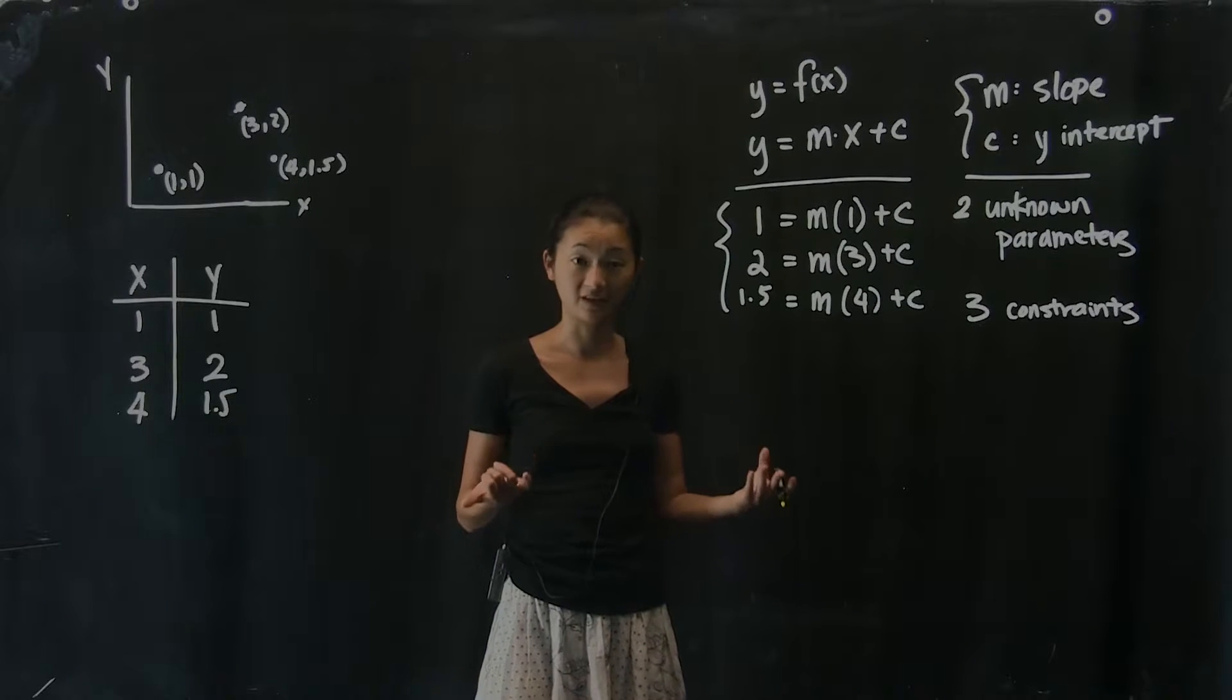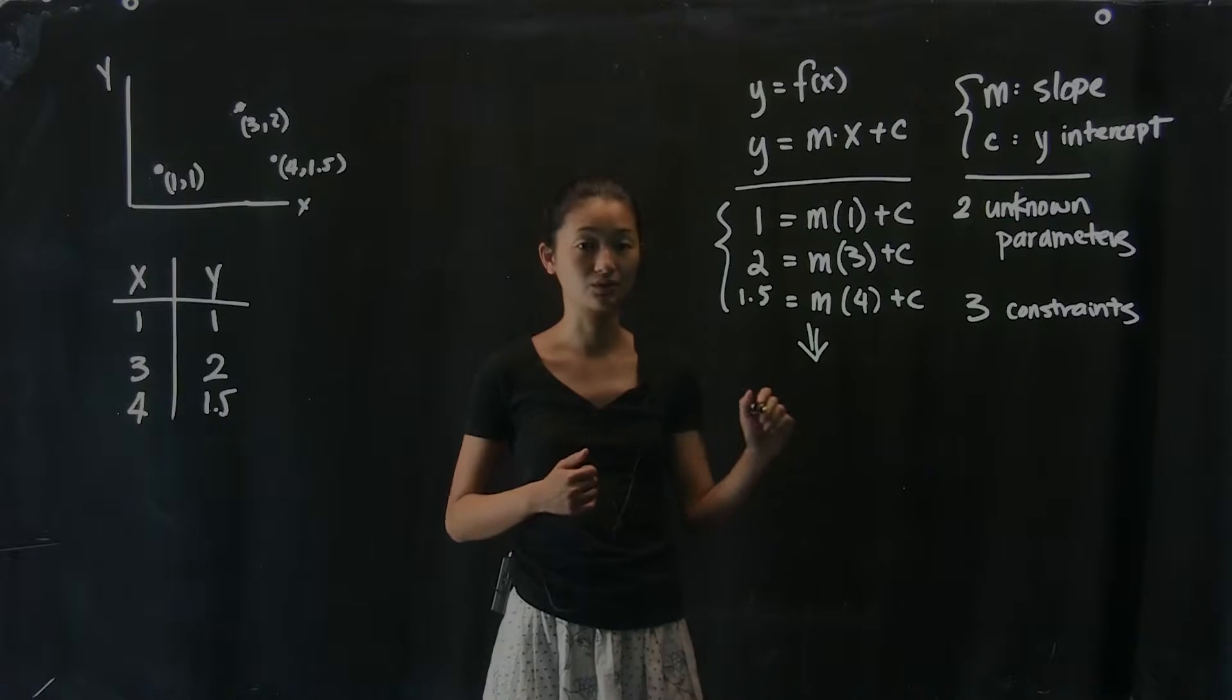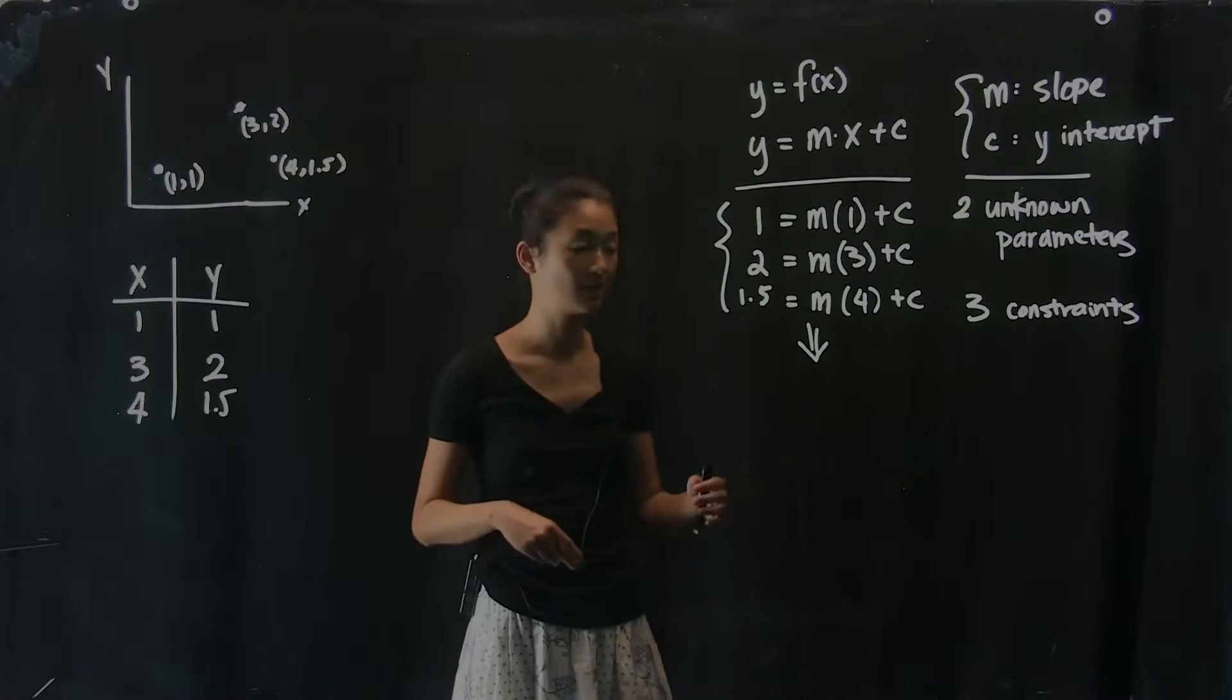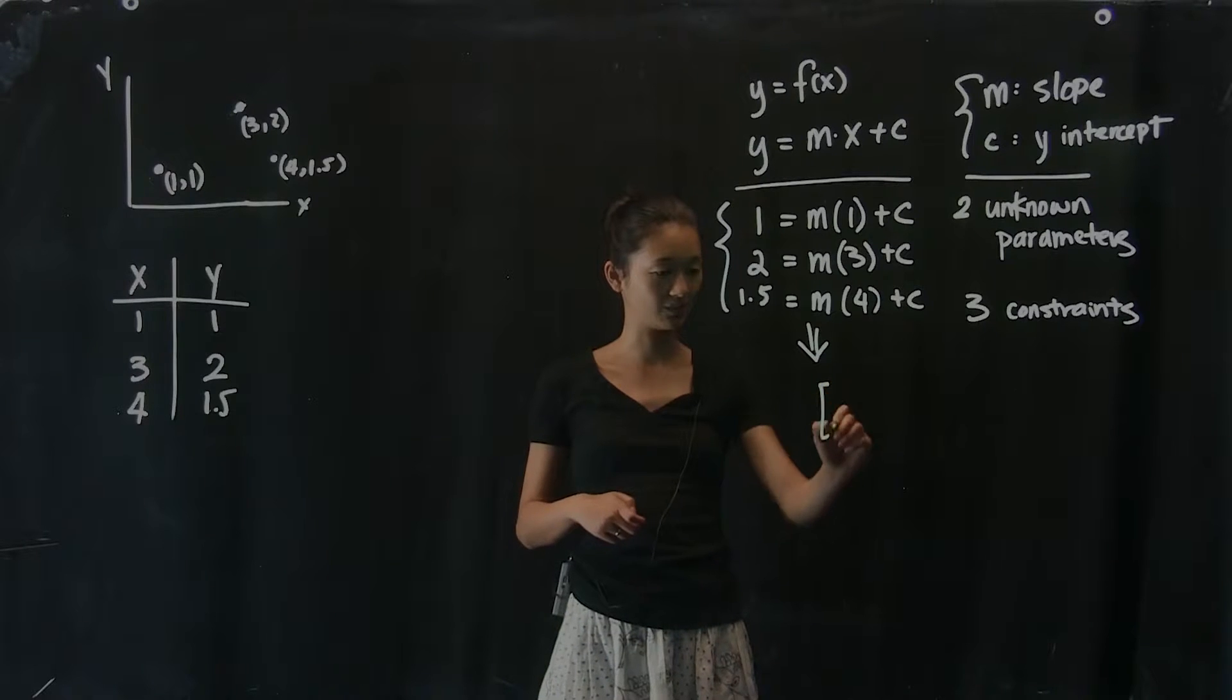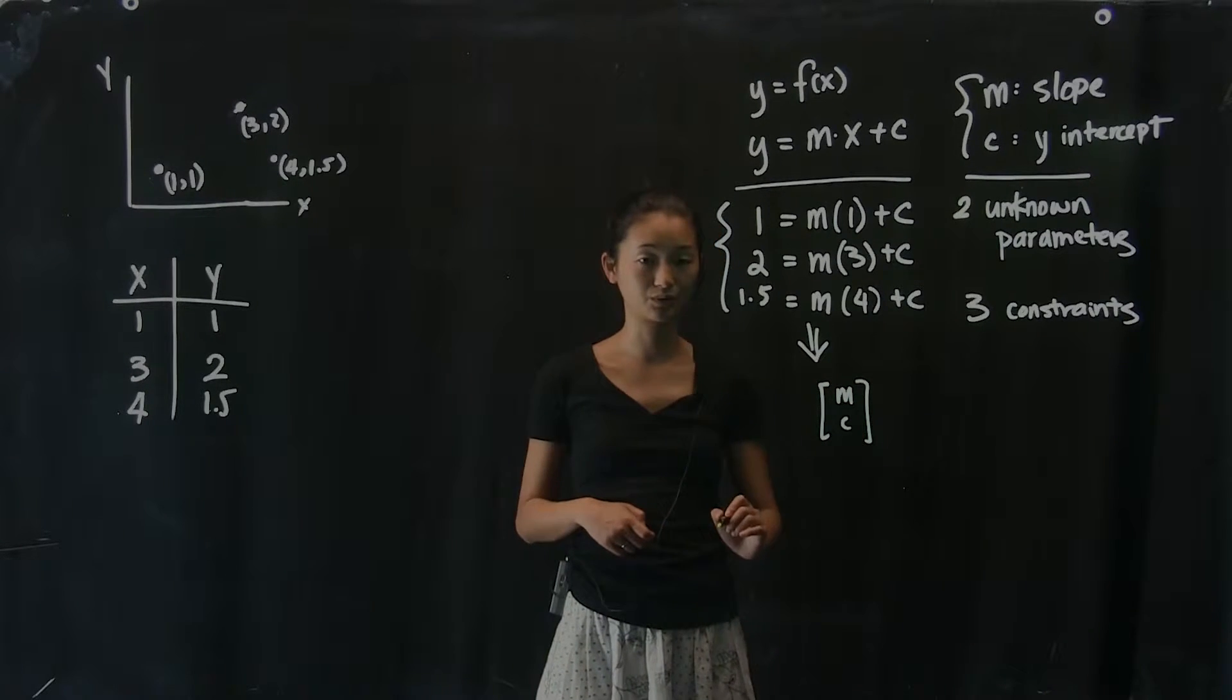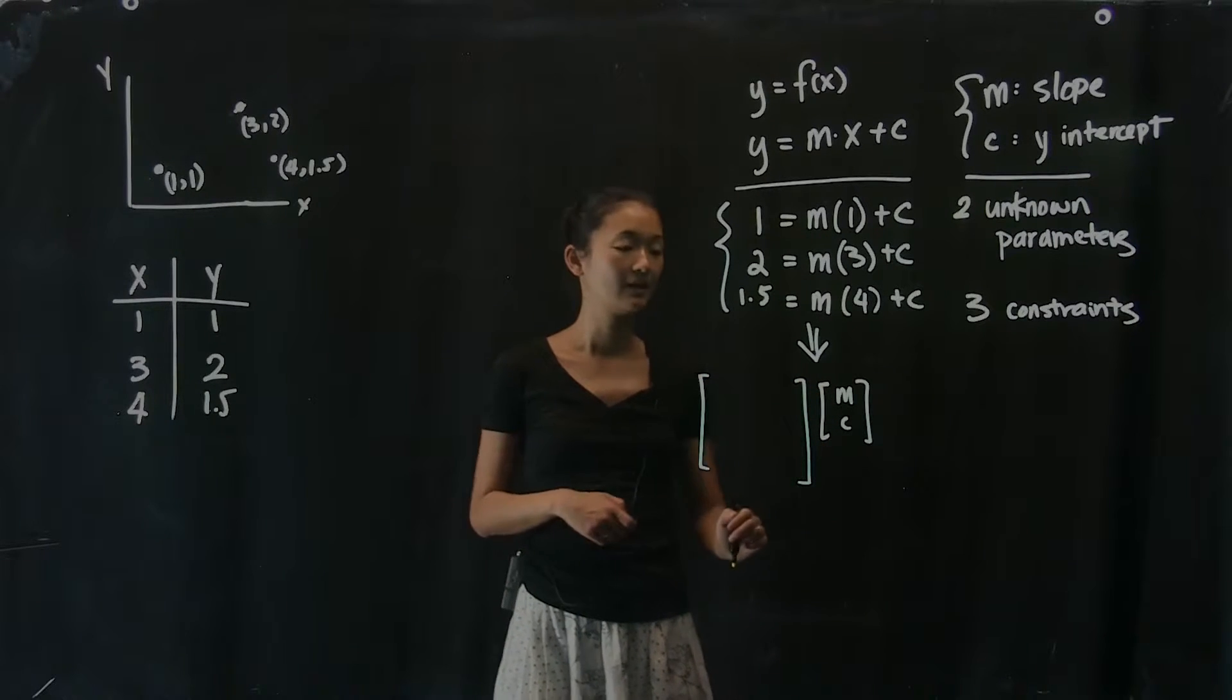And so what we're going to do is go through exactly the same exercise as before and try to turn this into an Ax equals b matrix system of equations problem. So let's see. I'm going to do it just like before. I have my unknowns here. There's still two of them. It's this vector of 2 here.